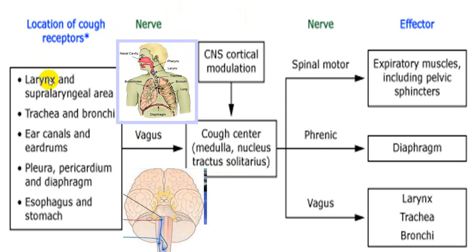There are receptors in the larynx, supralaryngeal area, trachea, and bronchi, as well as over the ear canal and eardrum. Stimulation of the pericardium, pleura, diaphragm, esophagus, and stomach can also produce cough reflex. From all these areas, the vagus nerve carries the stimulus to the cough center in the medulla — the nucleus tractus solitarius — which then via the spinal motor nerve, phrenic nerve, and vagus nerve stimulates the expiratory muscles including pelvic sphincters, and via the phrenic nerve causes diaphragm contraction followed by relaxation.